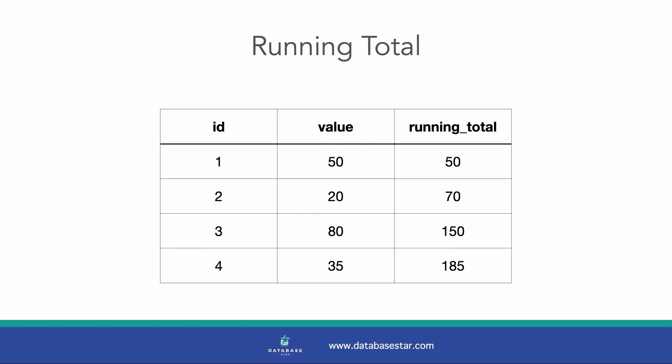One common use for this is to calculate a running total. Without Window Functions, you might need to select your data and calculate a running total inside your application code, such as JavaScript or PHP. However, you can use Window Functions to calculate it in SQL. This means all of our logic is in SQL and the database can run the calculations efficiently. You don't need to do any additional calculations in your application. Let's see an example.